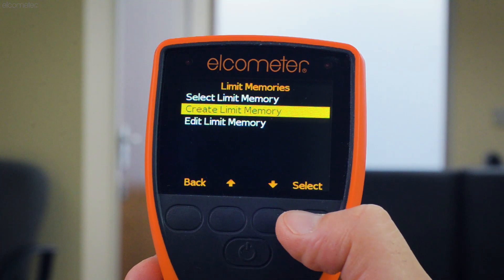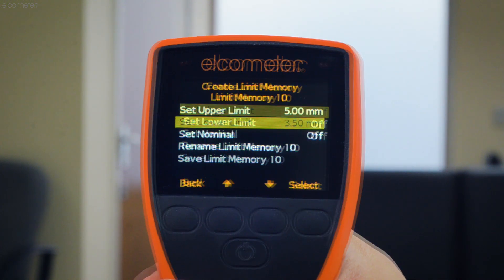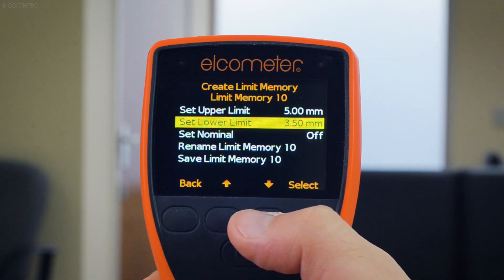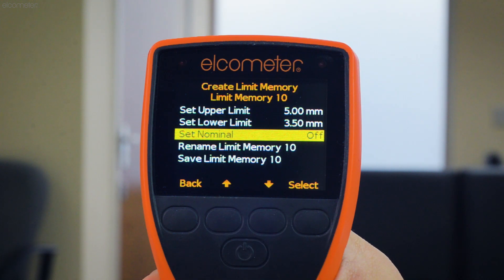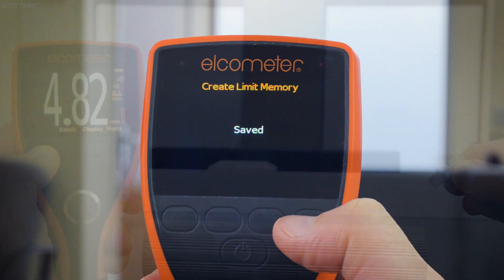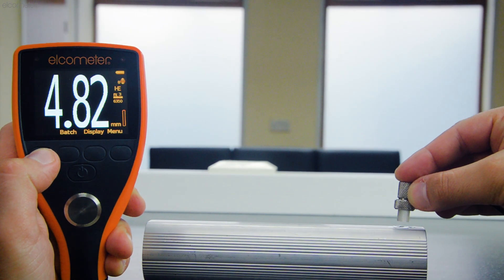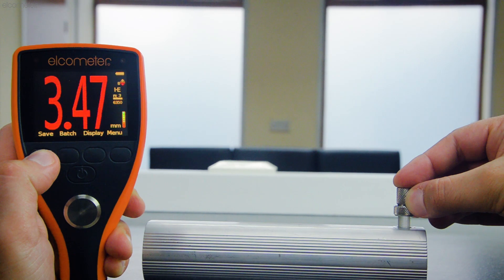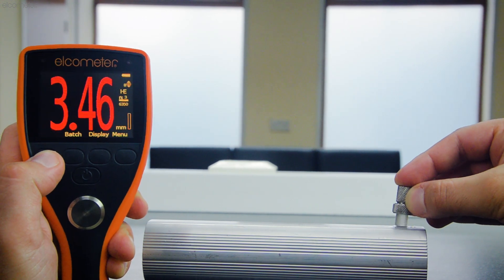With limit memories, the Elcometer PTG-8 allows you to set high and low limits, as well as the previously mentioned nominal target thickness. Once defined, whenever a reading exceeds these limits, the gauge gives you an audio and visual warning, clearly highlighting any problem areas.